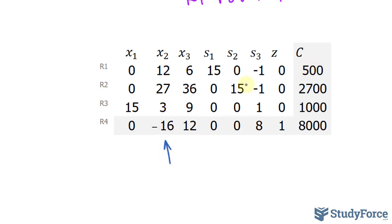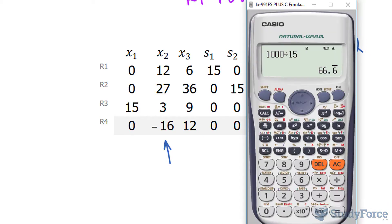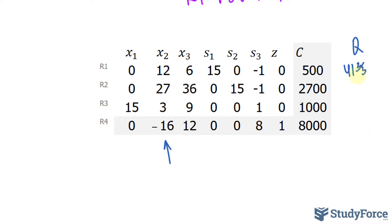And I'll divide 500 by 12 to find my quotients. So 500 divided by 12 gives me 41 and 2 thirds. 2700 divided by 27 is 100. And 1000 divided by 3 is 333 and 1 third. This means that 12 is our new pivot number.